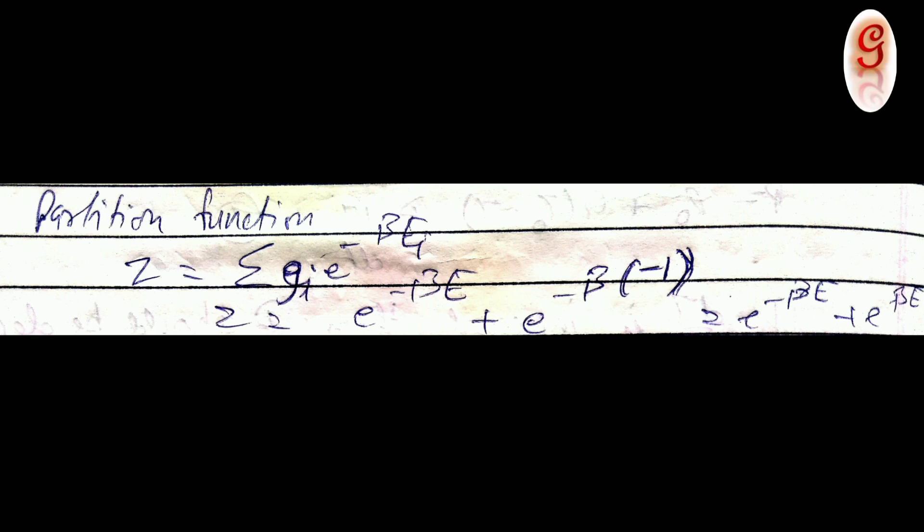Now, here there are two different energy terms. The energy for one is minus E and energy for the other is plus E, and the degeneracy G for both of them is 1.